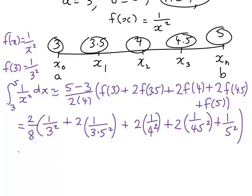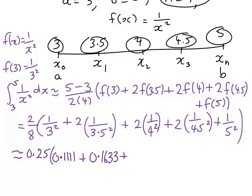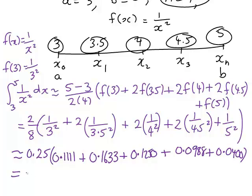Working these out to 4 decimal places: 2/8 is 0.25; 1/3² is 0.1111; 2 times 1/3.5² is 0.1633; 2 times 1/4² is 0.125; 2 times 1/4.5² is 0.0988; and 1/5² is 0.04. The sum inside the brackets is 0.5382, and multiplying by 0.25 gives 0.1346 to 4 decimal places.